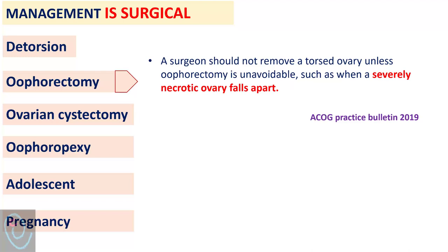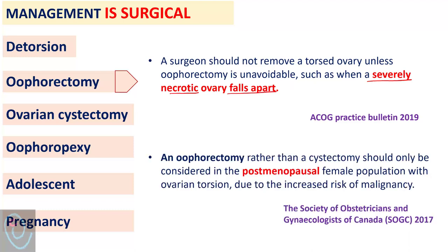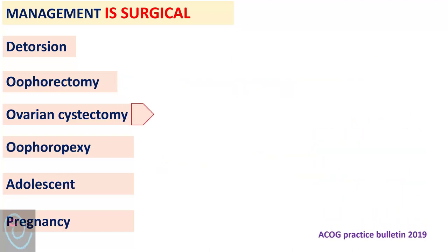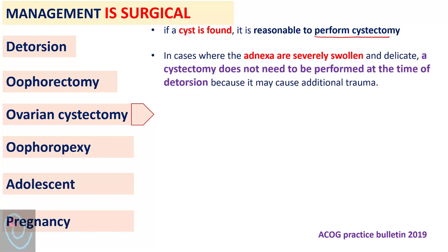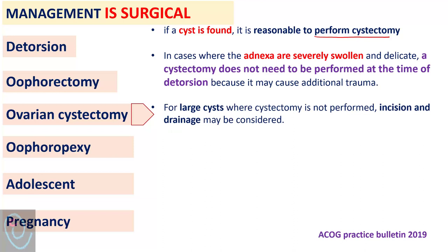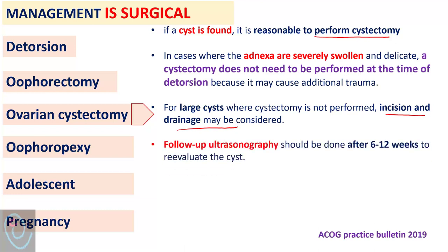Oophorectomy can be performed in certain situations, such as a severely necrotic ovary which falls apart. The Canadian Society adds another indication: oophorectomy can be performed in post-menopausal women. In the presence of an ovarian cyst, it is reasonable to perform cystectomy. In cases where the adnexa are severely swollen and delicate, cystectomy does not need to be performed at the time of detorsion as it may cause additional trauma. If there is a large cyst and cystectomy is not performed, incision and drainage may be considered.